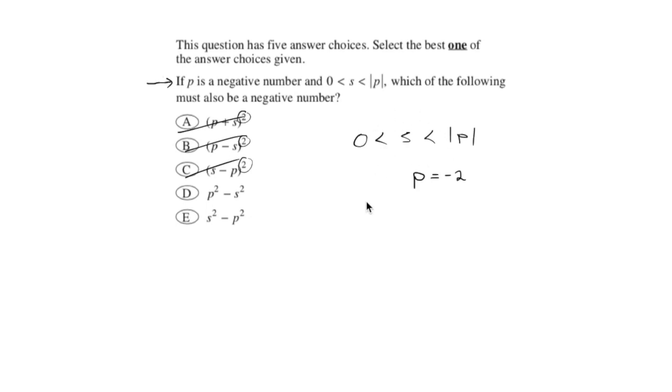Now let's reevaluate this statement. Now 0 is less than s, which is less than the absolute value of negative 2. I'll remind you that the absolute value function has the effect of taking a negative sign and turning it positive. So what really goes on the right here is 2.